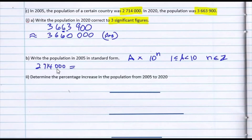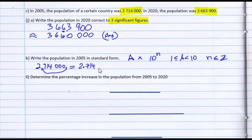We take this number and write it as a number between 1 and 10. We take the decimal point and put it between the first two significant figures, giving us 2.714. This number is between 1 and 10 — in fact it's between 2 and 3. We don't need to write the zeros because the power of 10 we multiply by will give us back the original number. The decimal point was shifted from the end and placed between the 2 and the 7, passing 6 digits. Since we moved 6 places to the left, we have a positive 6. So the answer is 2.714 × 10^6.